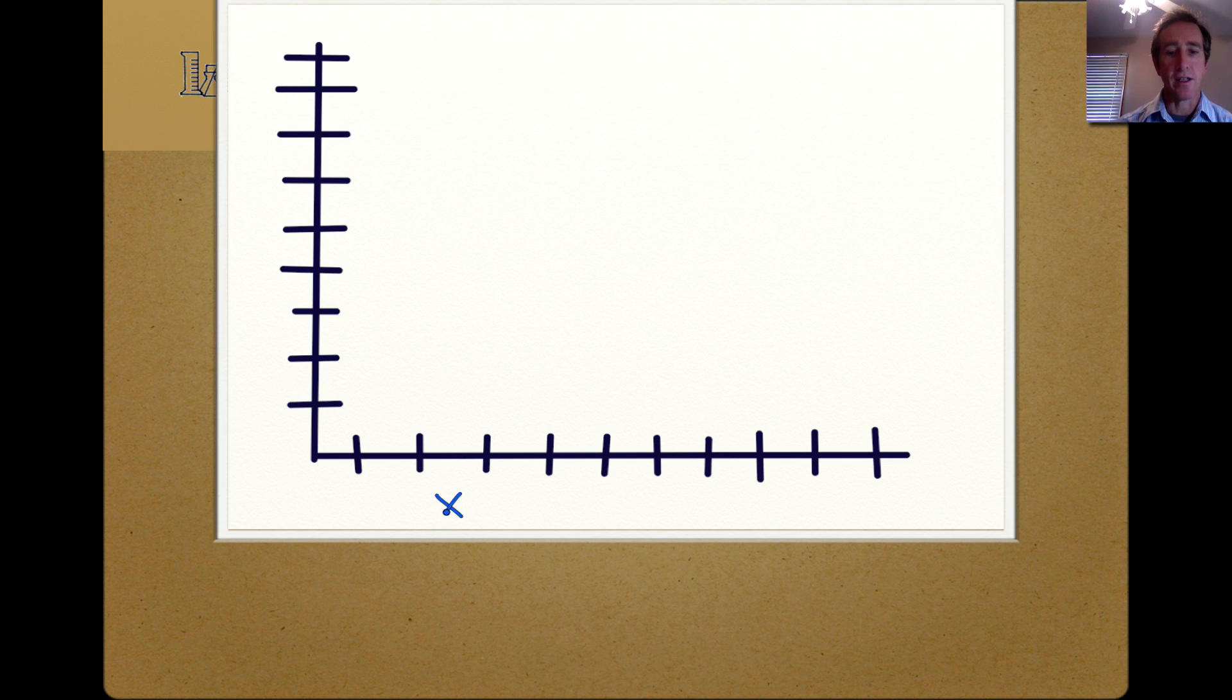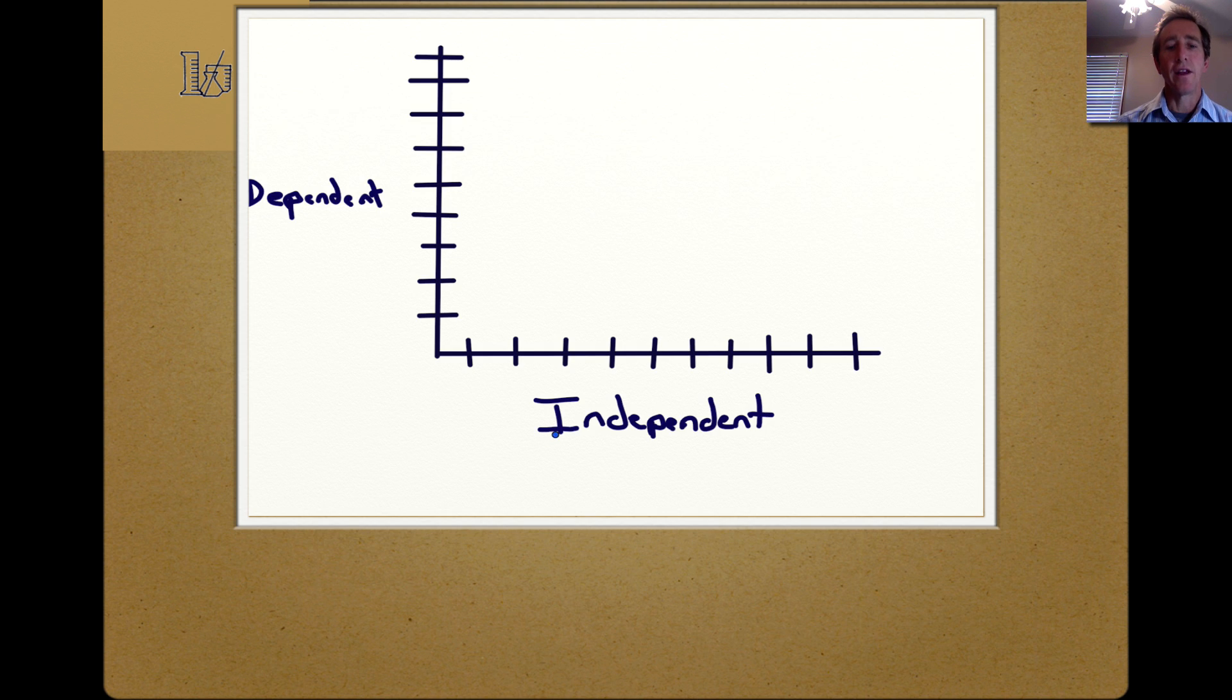This is our graph with some ticks along the x-axis and some ticks along the y-axis. This is how you remember which variable goes where. These ticks along the x-axis look like the letter i in the alphabet. The independent variable goes along the x-axis and you can remember because the ticks on the x-axis look like i's and the independent variable begins with the letter i.